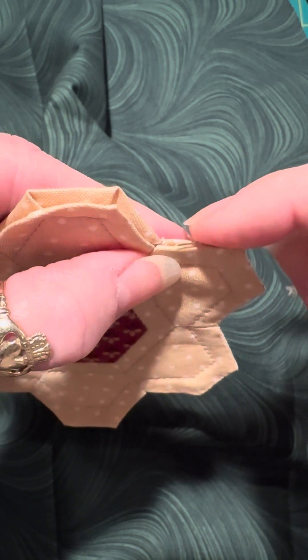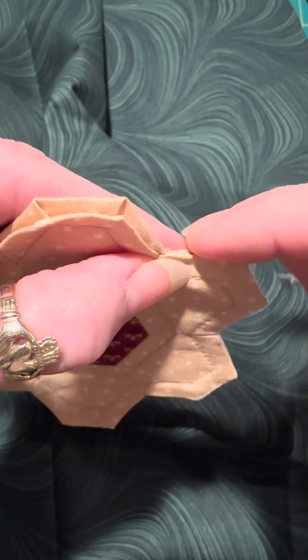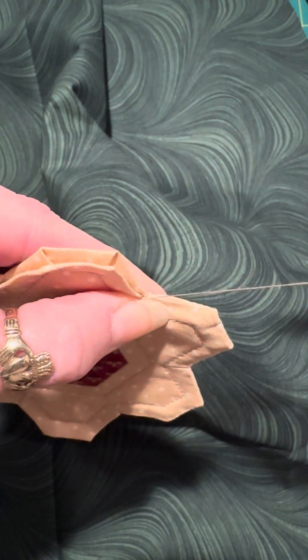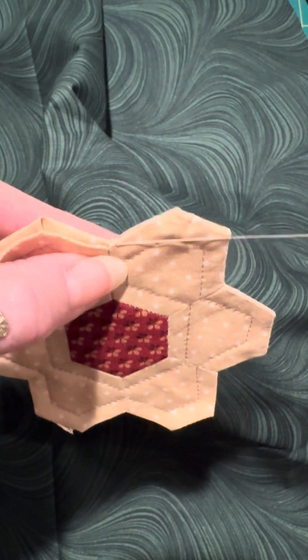Using the edge of my needle, like if I was doing applique, I'm gonna pull that down within and I'm gonna take those two stitches right there. I'll go back and take it out.